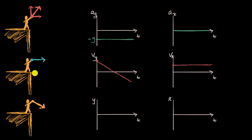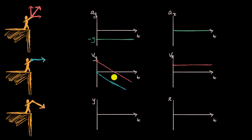What would the velocities look like for the blue scenario? Our velocity in the y direction starts at zero — no initial y velocity — but then we are accelerated downward, so the velocity gets more and more negative as time passes. Notice the slope on these two lines is the same because the rate of acceleration is the same, even though you had a different starting point. In the x direction, the initial velocity here is slightly larger, so it stays at a slightly higher constant value.